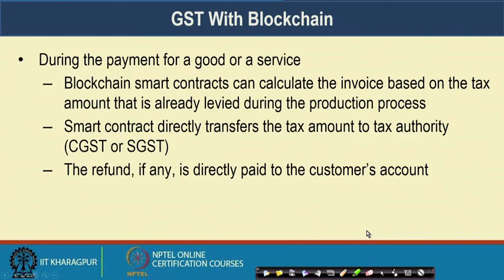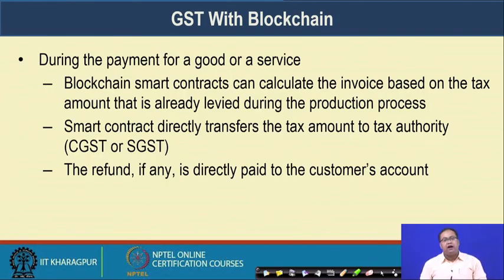The advantages here are: during payment of a good or service, the blockchain smart contracts can calculate the invoice based on the tax amount already levied during the production process. The smart contracts directly transfer the tax amount to the tax authority — if it is SGST it transfers to the state government, if it is CGST it transfers to the central government — and the refund, if any, is directly paid to the consumer's account. You do not have to wait for a refund, and this entire audit log can be verified to check correctness.